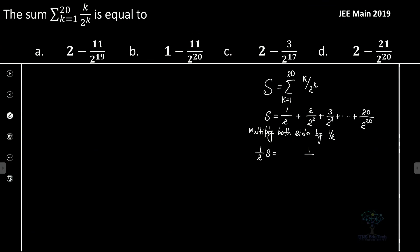So it became 1 by 2 square plus, so it's 2 by 2 to the cube plus dot dot 2, 19 by 2 to the power 20 plus 20 divided by 2 to the power 21. So that's actually 1 by 2 of s.